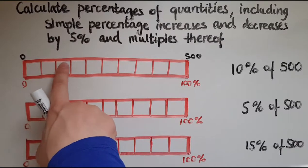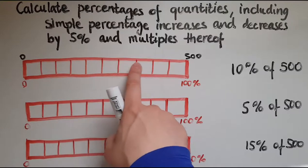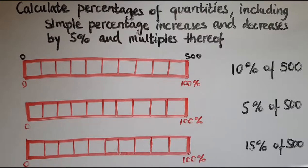So I've got 10, 20, 30, 40, 50, 60, 70, 80, 90, 100%. So this is equal to 10%.